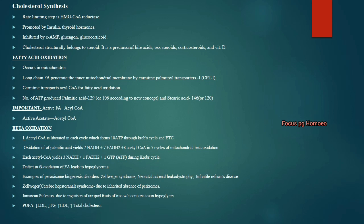These 8 acetyl-CoA re-enter the fatty acid synthesis cycle. Each acetyl-CoA gives 3 NADH, 1 FADH2 and 1 GTP during the Krebs cycle. The defect in beta oxidation of fatty acids leads to hypoglycemia. Zellweger's syndrome is due to the inherited absence of peroxisomes.